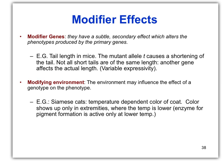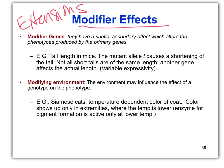All right, folks, more extensions to Mendelian genetics. We're going to talk today about modifier effects. A modifier gene alters the phenotype produced by a primary gene — so one gene altering another gene. It's kind of like expressivity, but it's caused by another gene.